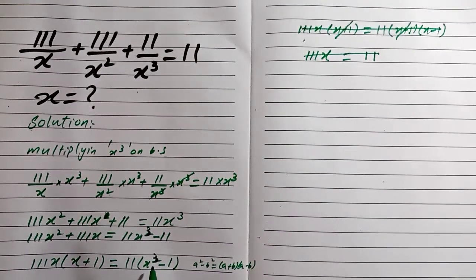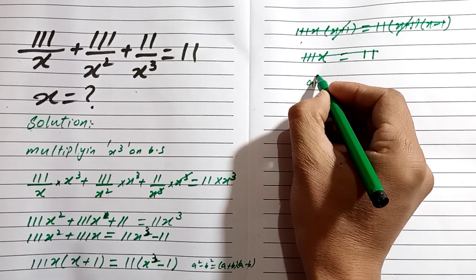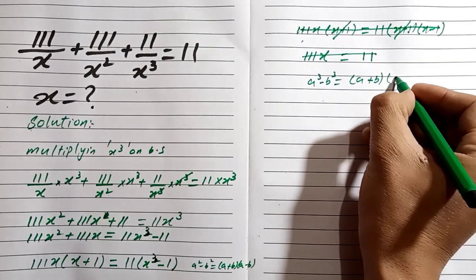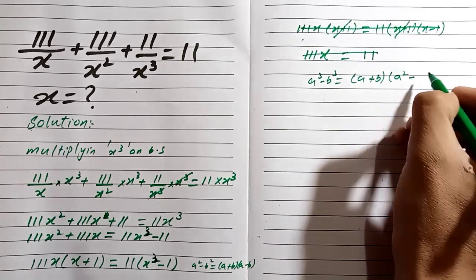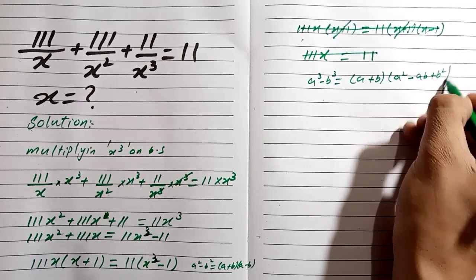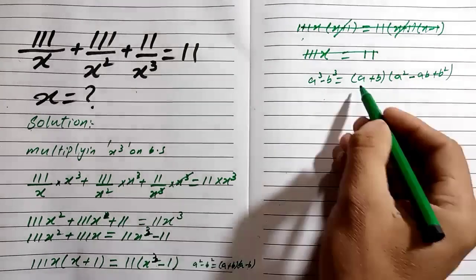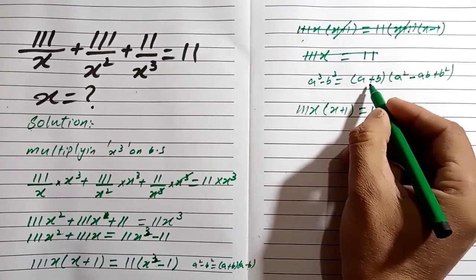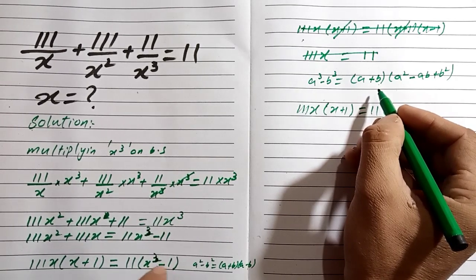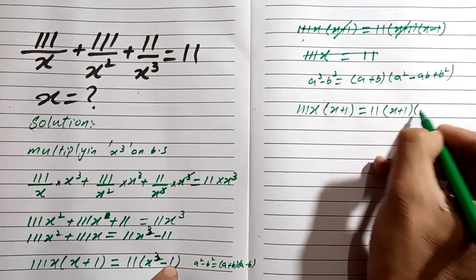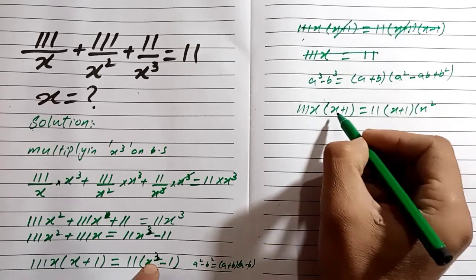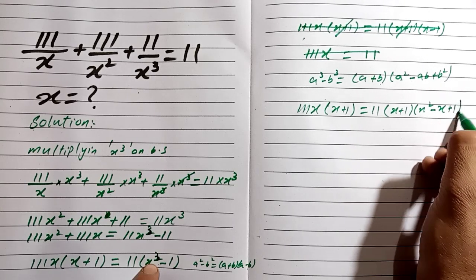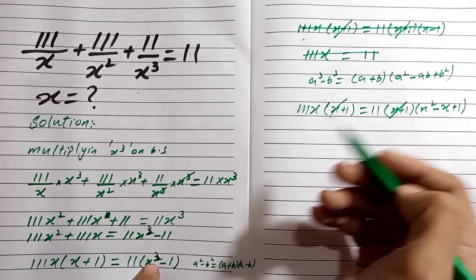In the next steps we use the cube root formula: a³ minus b³ equals (a minus b)(a squared plus ab plus b squared). We apply this formula to our term. We have 111x times (x plus 1) equals 11, where x is our 'a' and 1 is our 'b'. So x plus 1 on both sides will be cancelled, and we are left with the simplified expression.